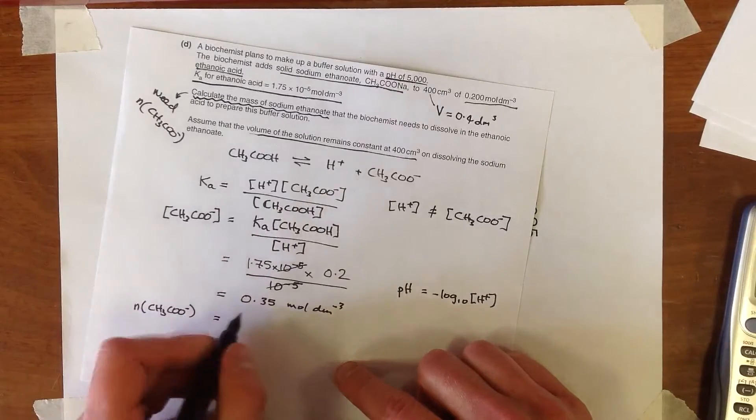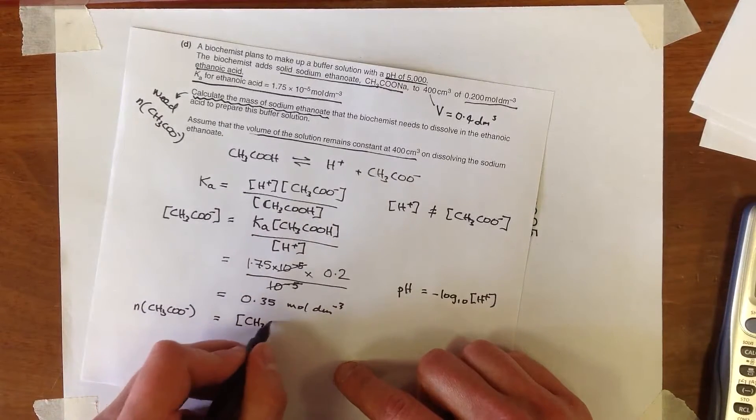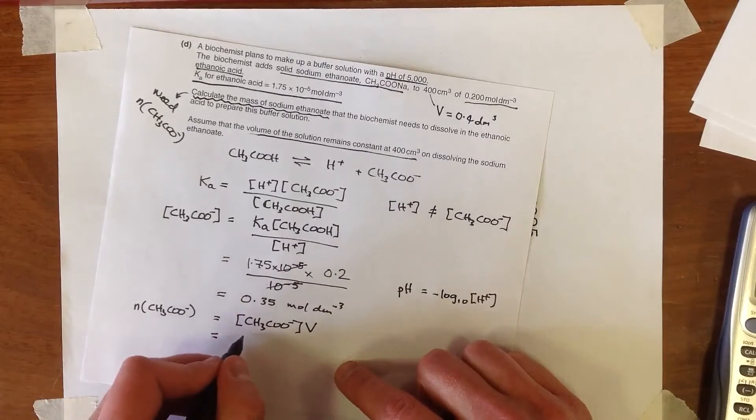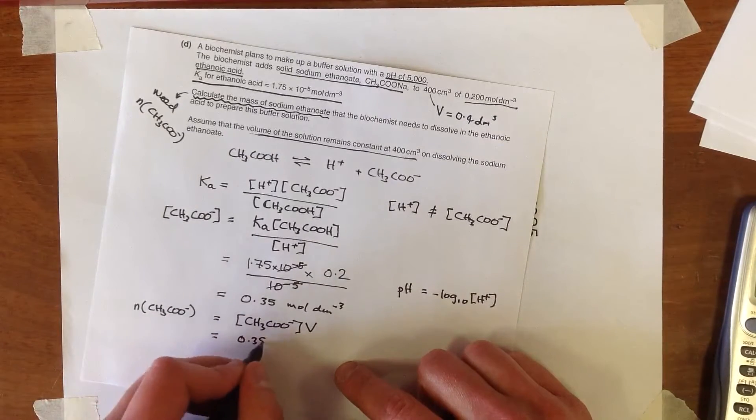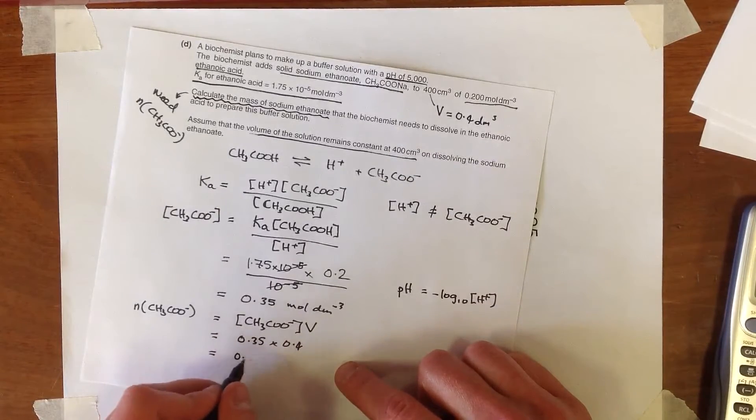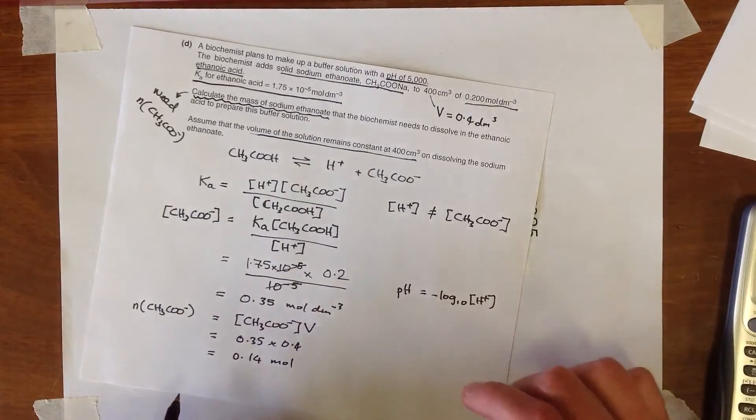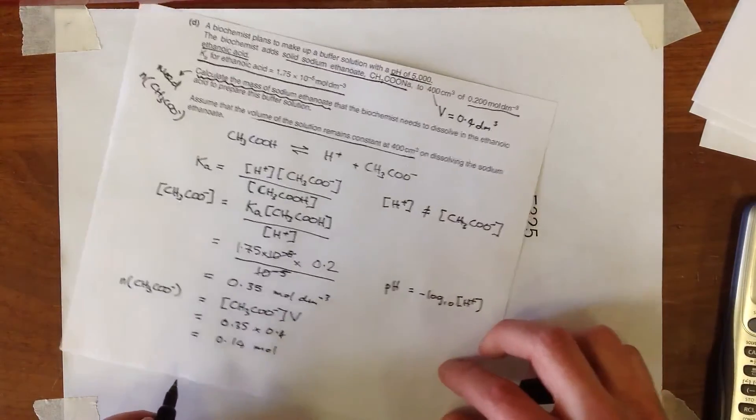And we're going to do that to be concentration multiplied by the volume of the solution. So when we do 0.35 times 0.4, we're going to find out that our number of moles is 0.14 moles of the ethanoate. And now the final thing we need to do is just to find the mass of that,